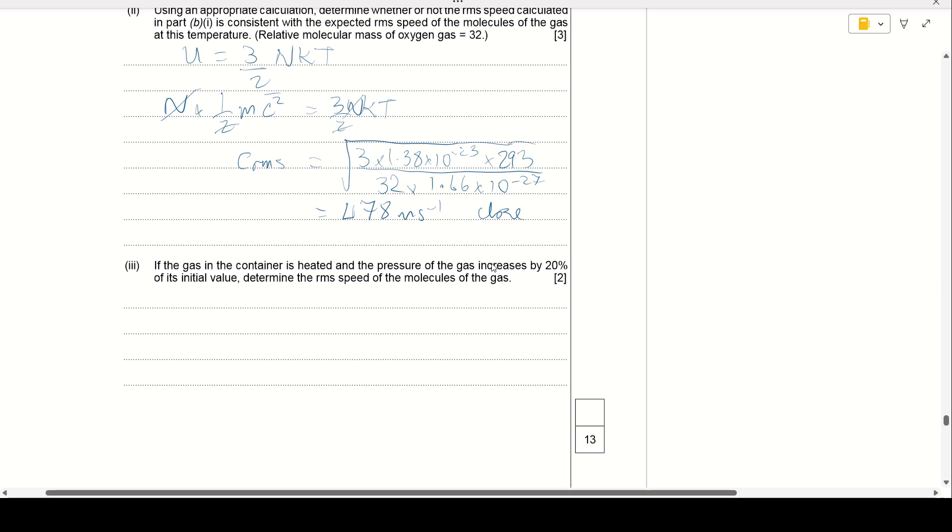Finally, in the question, if the gas in the container is heated and the pressure of the gas increases by 20% of its initial value, determine the RMS speed of the molecules of the gas. Well, one way of doing this would be to try to calculate the pressure of the gas. In fact, thinking about it, we can't actually calculate the pressure of the gas without knowing the volume. So instead, we're going to look at the equation given in your data book, P equals 1 third rho C squared bar, where rho is the density of the gas. But we've not changed the mass of the gas. We've still got the same number of gas molecules in there. The volume was fixed. So rho is a constant.